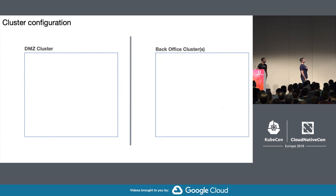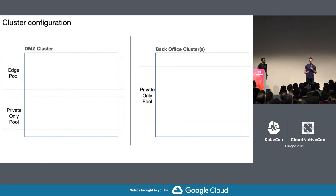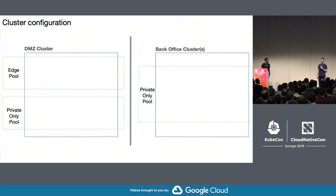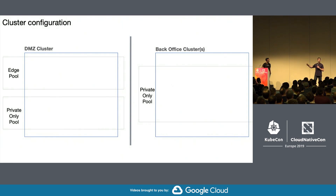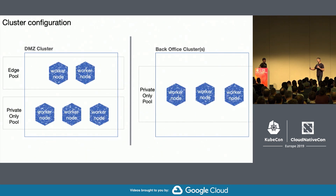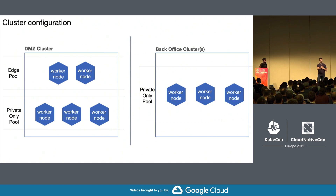Let's take a look at a very basic view of a situation we're looking at with a customer. They have a situation where they must control client access into and out of the cluster with very strict requirements. They want two separate clusters or sets of clusters — a DMZ cluster as well as multiple back office clusters. These back office clusters may be on-premises or out in the cloud. The pools are basically a pool of worker nodes — VMs, bare metal — with very specific use cases: edge pools and private-only pools.